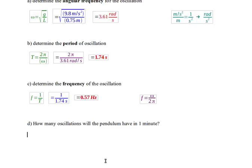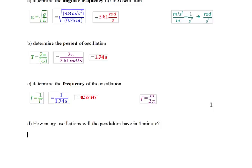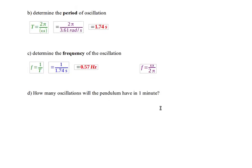Now I'm moving on with Part D of this problem. So again, I was describing something about a simple pendulum. I found the angular frequency, the period, and the frequency. And now I'm asking, how many oscillations will the pendulum have in one minute?